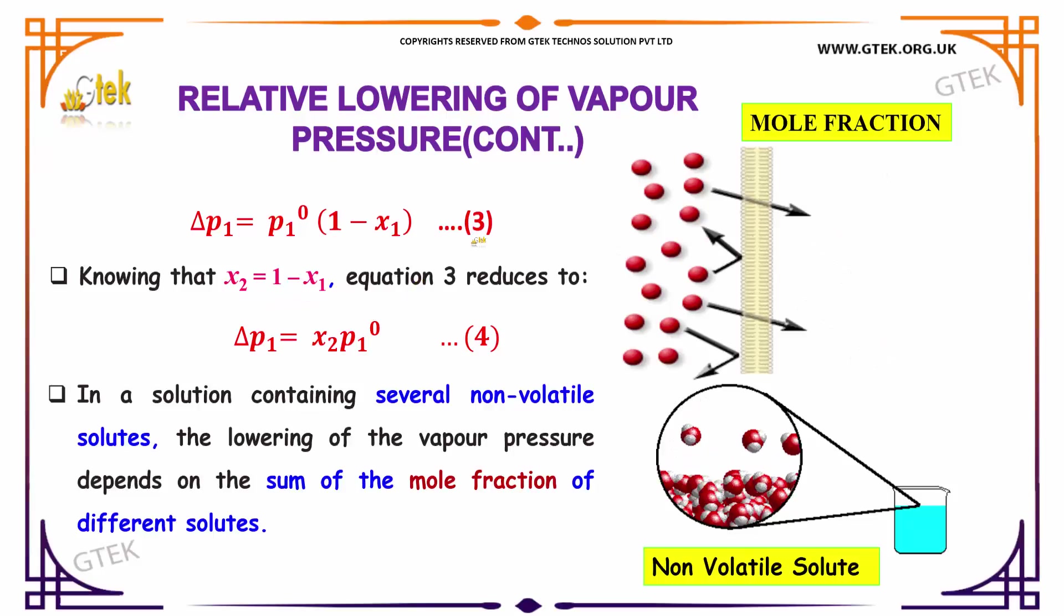x2, which is nothing but equivalent to 1 minus x1. The equation becomes delta P1 is equal to x2 into P10.